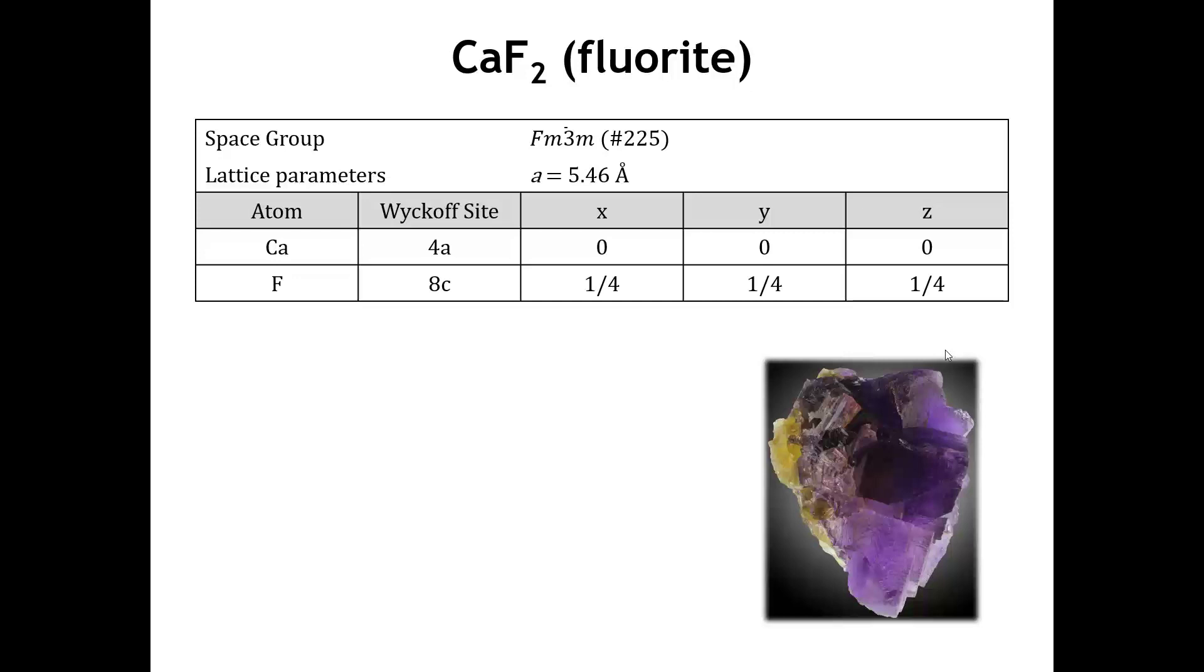The representation of the fluoride crystal structure, everything we need to know about it, is given in this table. So, to describe a crystal structure, we need to give the space group symmetry. We need to give the dimensions of the unit cell. And then we need to give the occupied Wyckoff sites for the atoms, and then the coordinates of the atoms on those Wyckoff sites.